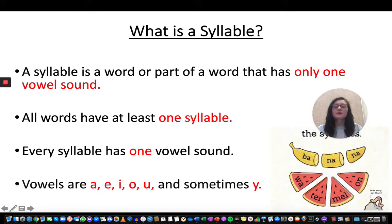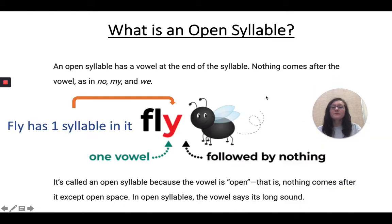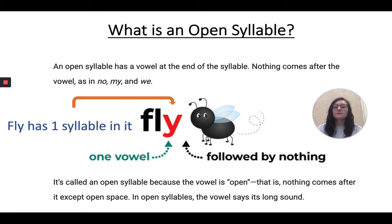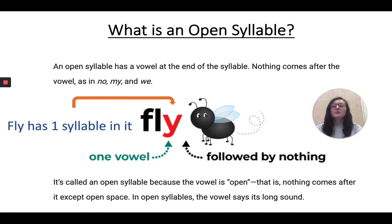First we're going to look at what an open syllable is. An open syllable has a vowel at the end of the syllable, so nothing comes after the vowel — such as in the words no, my, and we. We're going to look at the word fly.